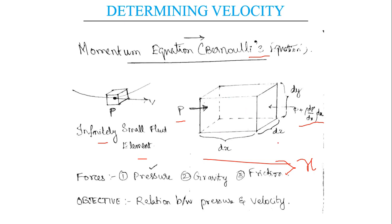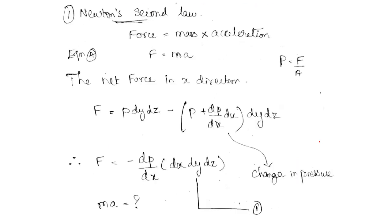In this fluid element there are three different types of forces acting: pressure force, gravity force (since it has volume and mass), and friction forces. However, our objective is to derive the relation between pressure and velocity, so for simplicity we will neglect gravity and friction. For deriving this relation we use Newton's second law: F = ma.